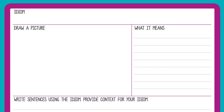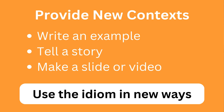So once you tell the students it means to wait, you would then want to have them write down an explanation or try to explain it to their peers. Then you want to put it in a new context — students can write an example, tell a story, make a slide, put it in dialogue, make a video. You really want students to use the idiom in a new way.